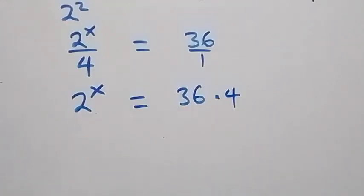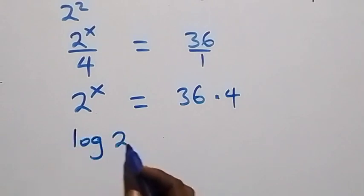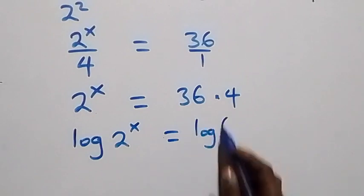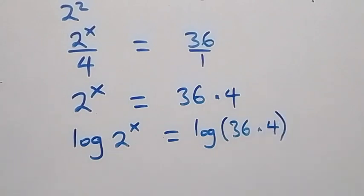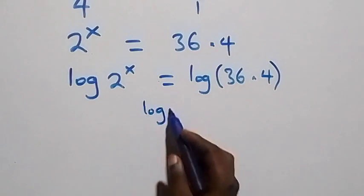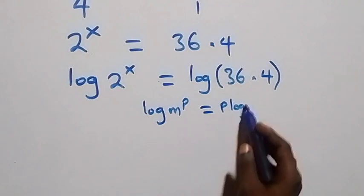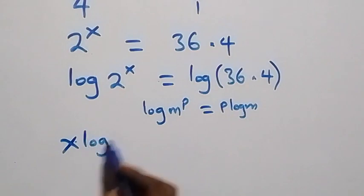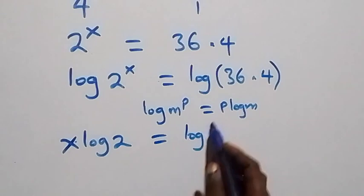The next step: we take the log on both sides. We have log 2 raised to power x equals log of 36 times 4. Then from the power rule of logarithms, when we have log m raised to power p, this is the same as p log m. So this becomes x log 2 equals log 36 times 4.